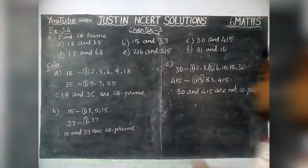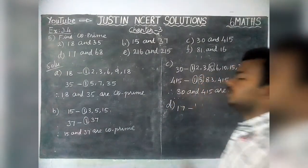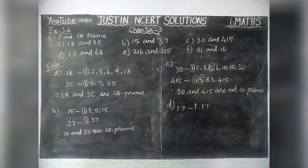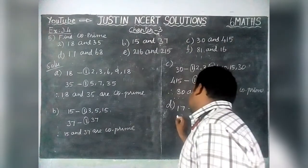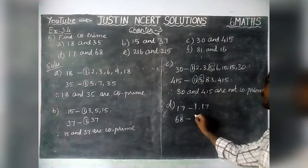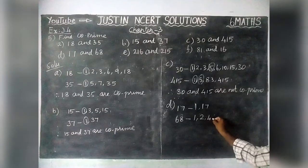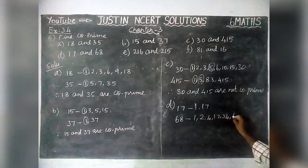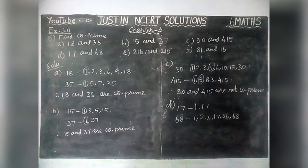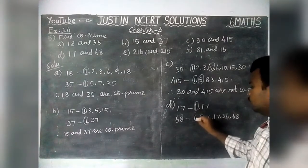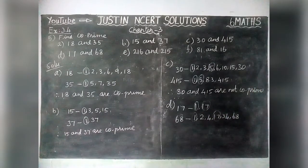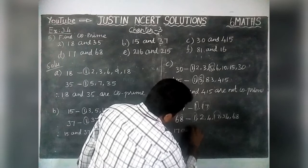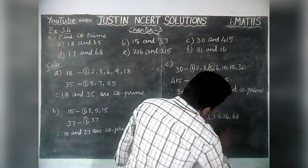Option D: 17 and 68. Factors of 17 are only 1 and 17, because 17 is a prime number. Factors of 68 are 1, 2, 4, 17, 34, and 68. Here we have two common factors: 1 and 17. Therefore, it is not co-prime. 17 and 68 are not co-prime.